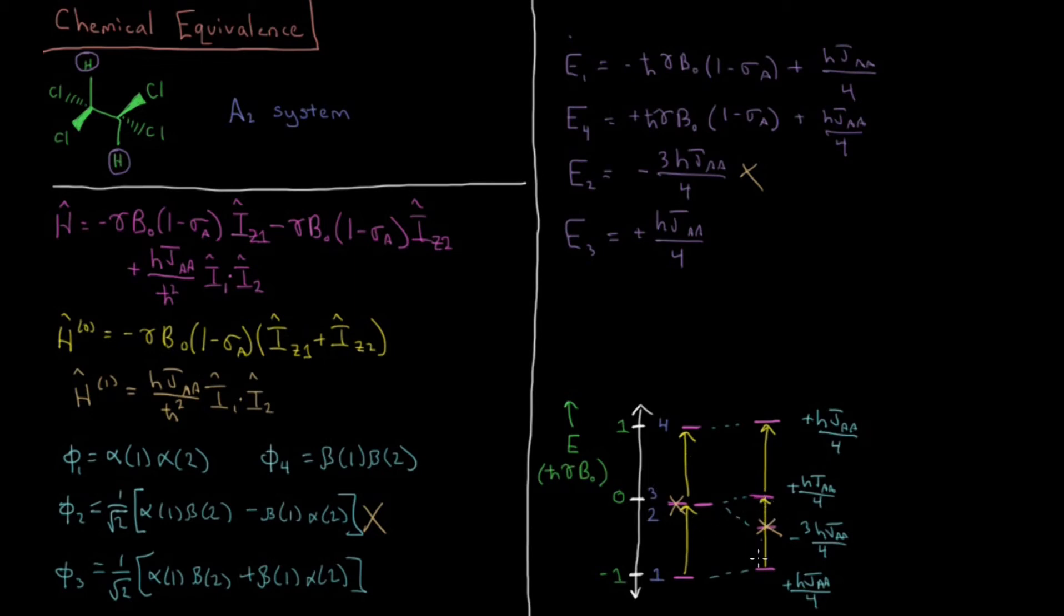And then we're going to shift here, but you'll notice what we're shifting by is the same value every time. So going from 1 to 3, they both get shifted up by H JAA over 4. And going from 3 to 4, they both get shifted up by H JAA over 4. So there's no difference in the peaks when they're coupled relative to when they're not coupled.